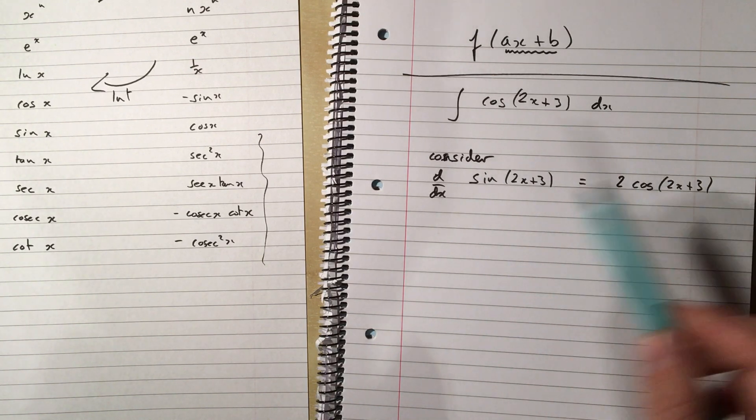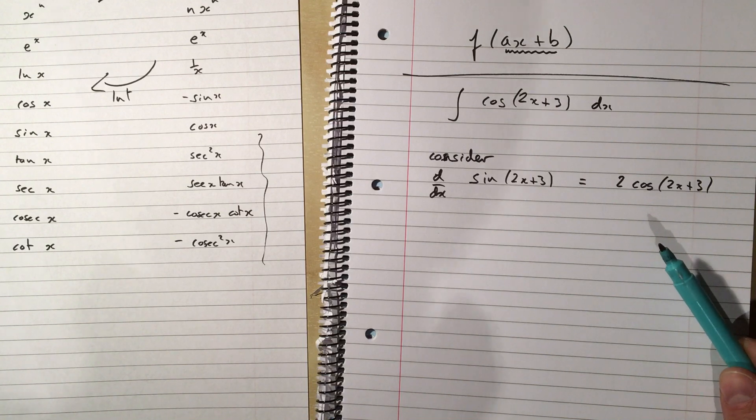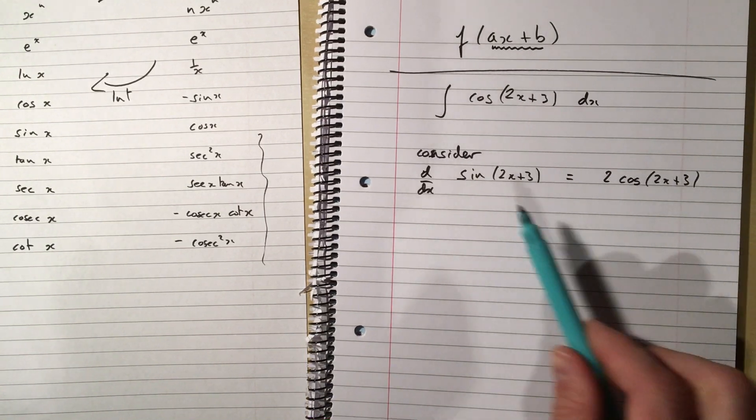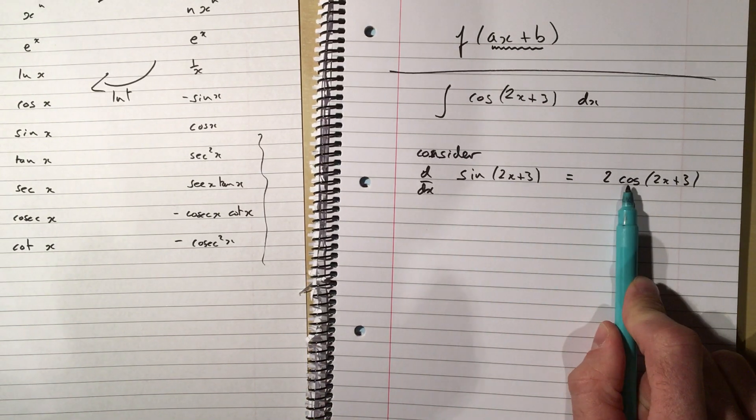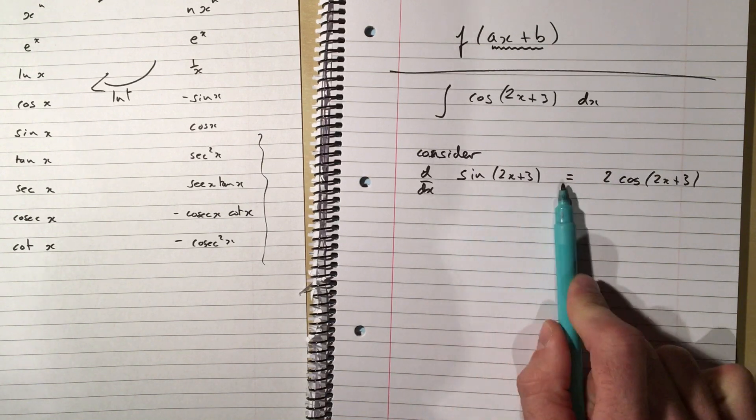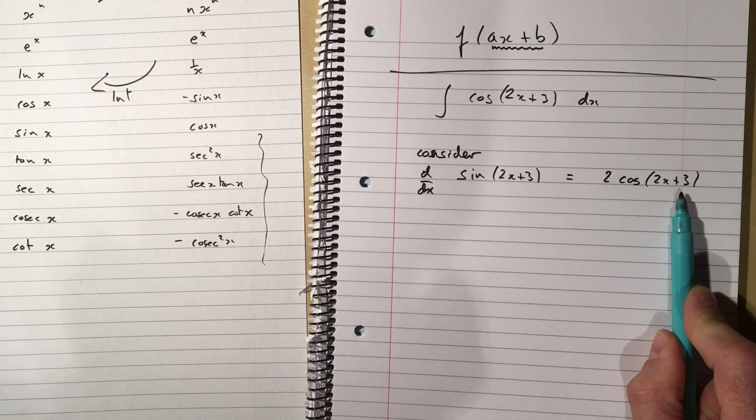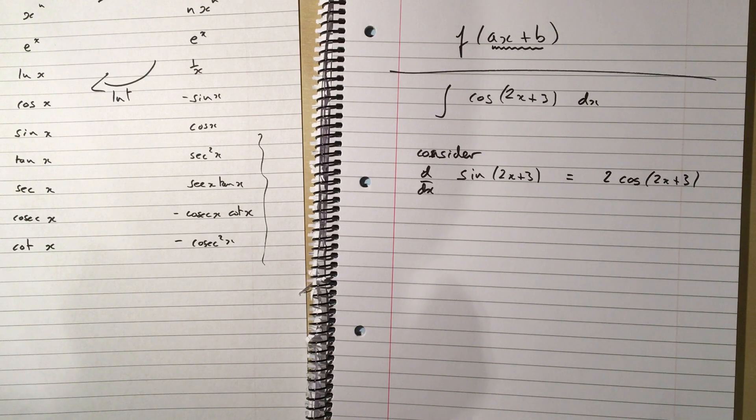Integration is using differentiation backwards, so we need to be able to do differentiation backwards before we're ready for this chapter. But sine differentiates to cos, so sine of 2x plus 3 differentiates to cos of 2x plus 3 times the derivative of the bracket, which is times by 2.